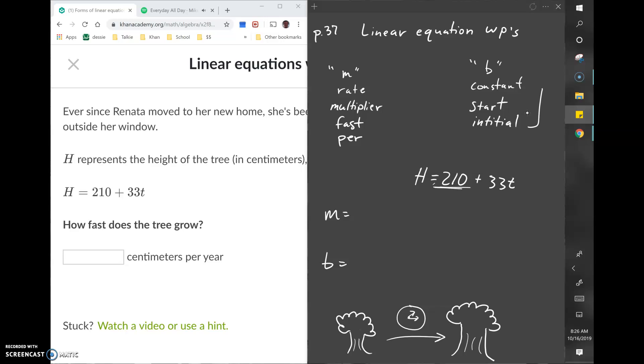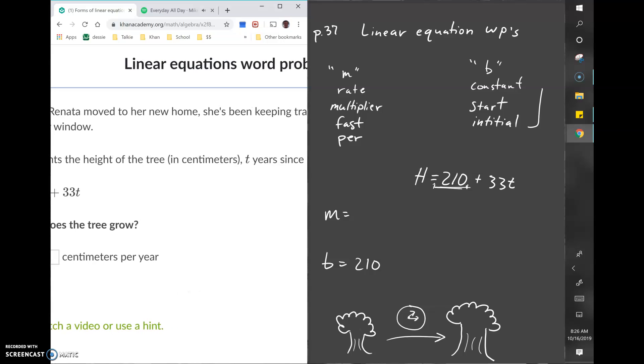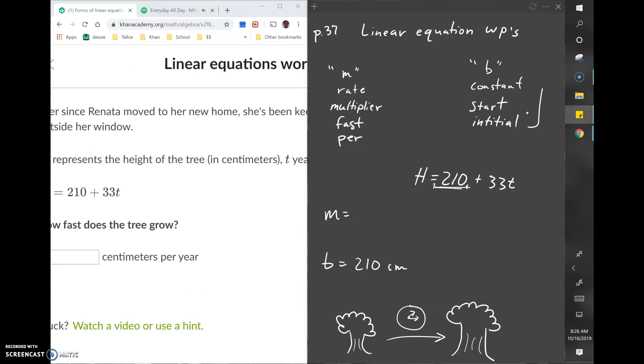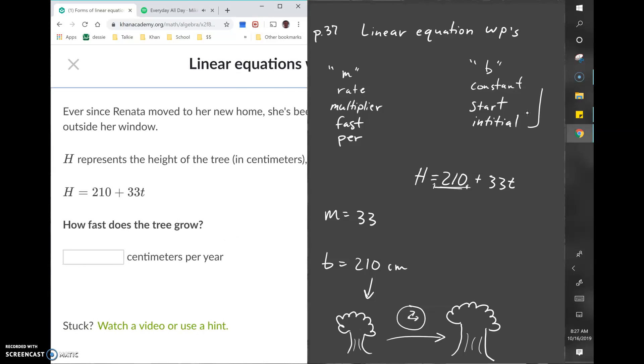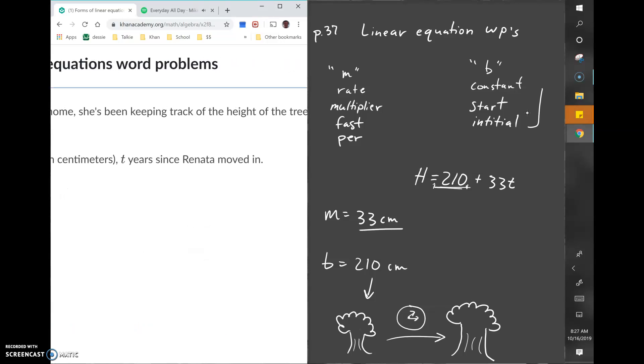Hopefully you identified that the B value or constant is 210, which represents 210 centimeters—that's how tall the tree was when she first moved in. The rate was 33, and the units for the rate would be 33 centimeters per year, since T is years.